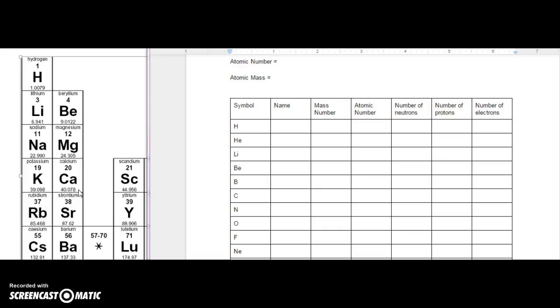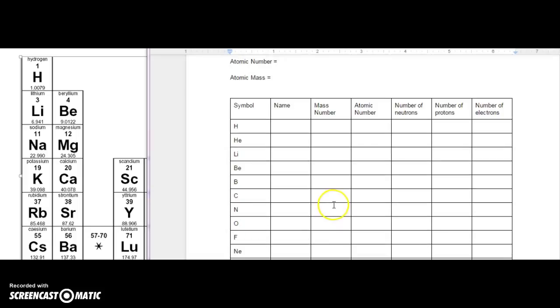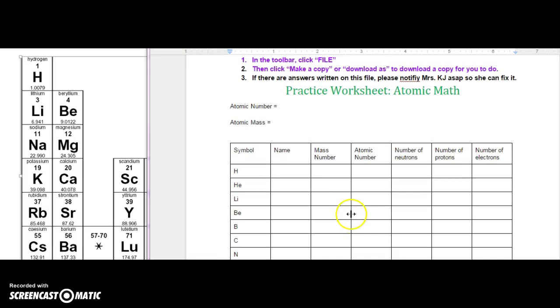This is the kind of thing where you could start to do it kind of mindlessly, just not thinking. But I purposefully chose the first 20 elements to go over because those are the ones that we use the most often in chemistry. I want you to start thinking of them and think about what you're putting down for answers.